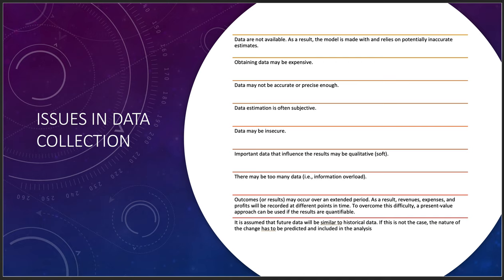There are key issues in data collection. Number one: data may not be available, so the model relies on potentially inaccurate estimates. Data can be dirty, in the wrong format, or not in a format machines can learn from. We're improving algorithms to handle dirtier and more unstructured data over time. Obtaining data can also be expensive — buying a private data source for a specific market segment can cost a lot.